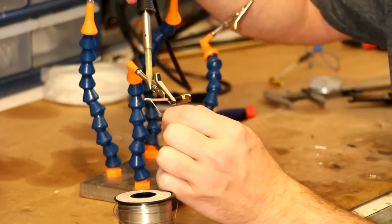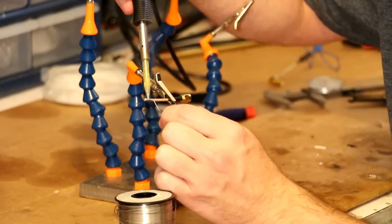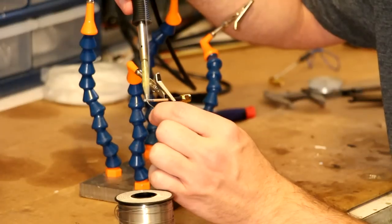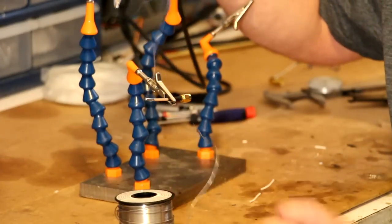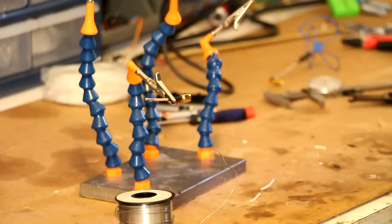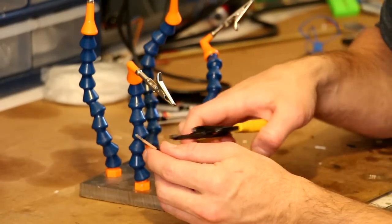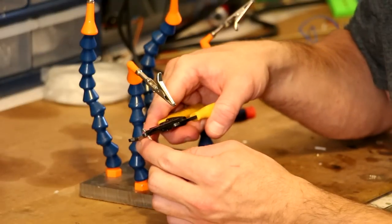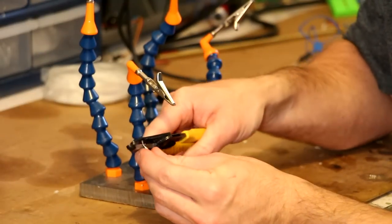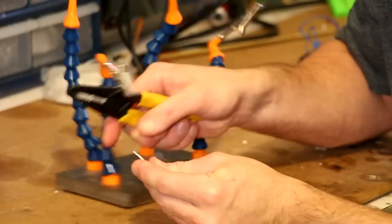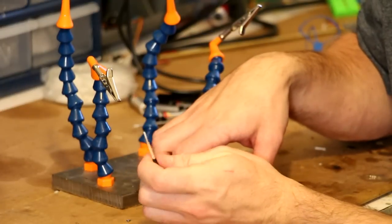Take your soldering iron and tin up the shielding very lightly. You don't want a thick coating of solder here as you're intending to cut this. Now take your wire strippers and strip off about a quarter of an inch of the shield. Just wiggle it around and it should pop free.